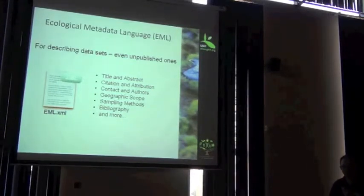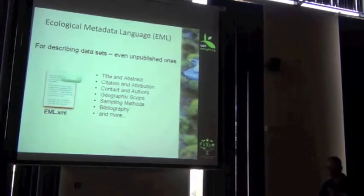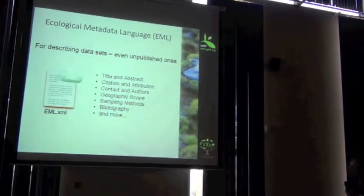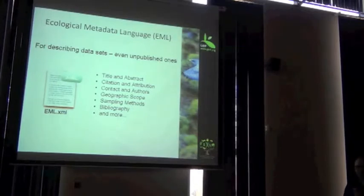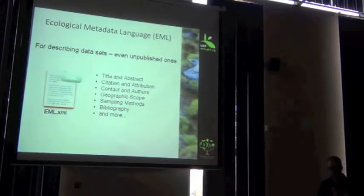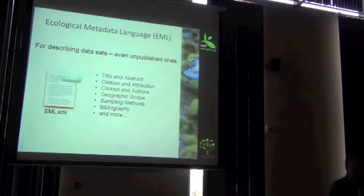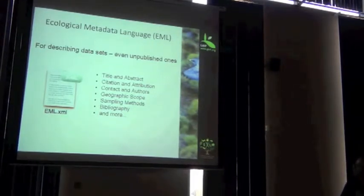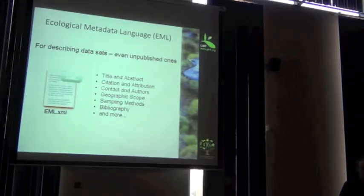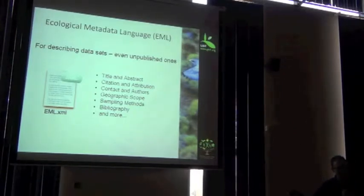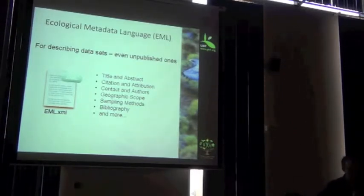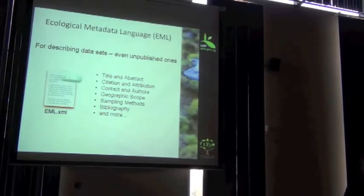Well, it's always a good idea to have a title and a description of what your data set is. Citation, the main contact, authors of the data, the geographic scope, the different sampling methods, bibliography, and so on and so forth. It's quite rich, and similar to what we were talking about with describing your data set with as many fields as possible, you want to try and do the same thing with your metadata.